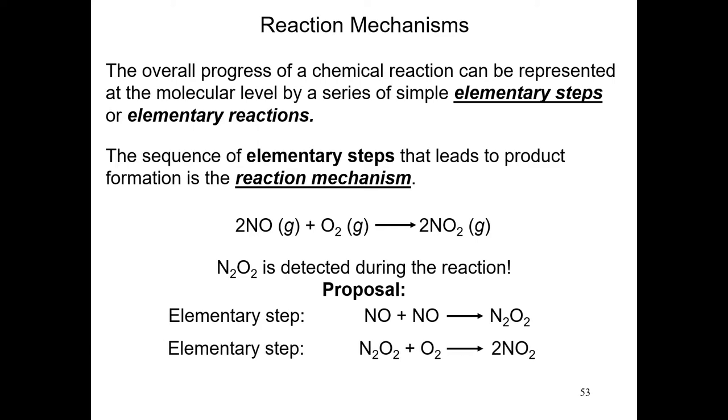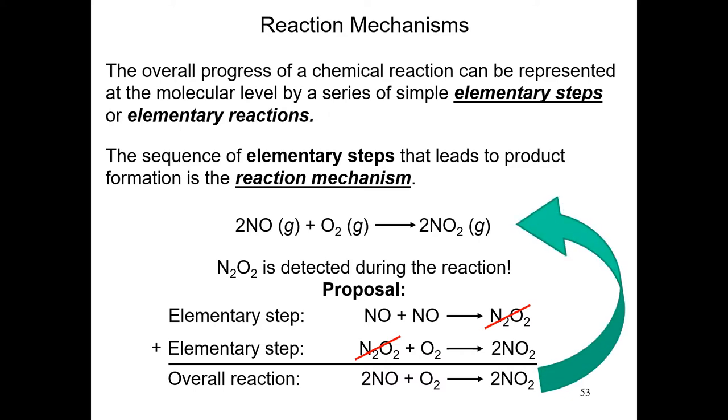In the second step, N2O2 reacts with oxygen to produce the two molecules of NO2. Notice that if we add these two reactions, just like in any algebra set of equations, the product of the first reaction cancels out with a reactant in the second reaction. So when you add them up, notice that you obtain this. You have two molecules of NO, one of O2, and the product is two molecules of NO2, which is exactly the chemical reaction that we had. So this is essentially how a reaction mechanism works. We propose several elementary steps that involve collisions between molecules.